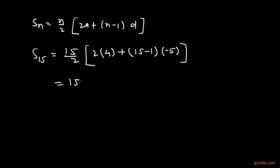So this equals N over 2 multiplied by 8 minus 70. This equals 15 over 2 multiplied by minus 62. Now we can cancel this 2 with this 62 to get 31, and if we multiply 15 with minus 31, we get minus 465.